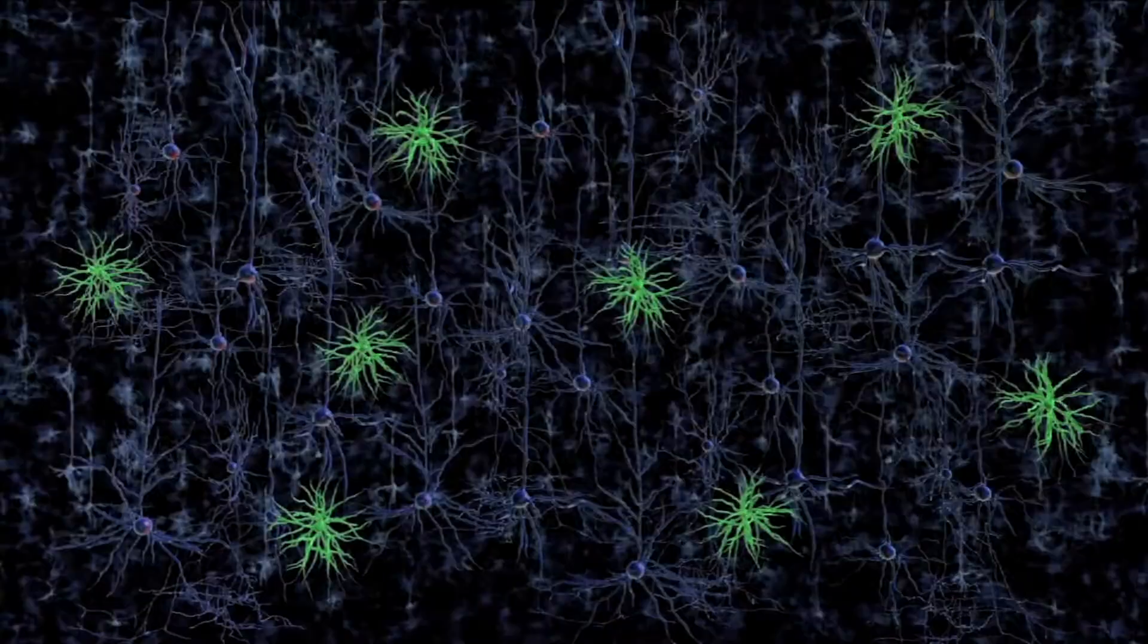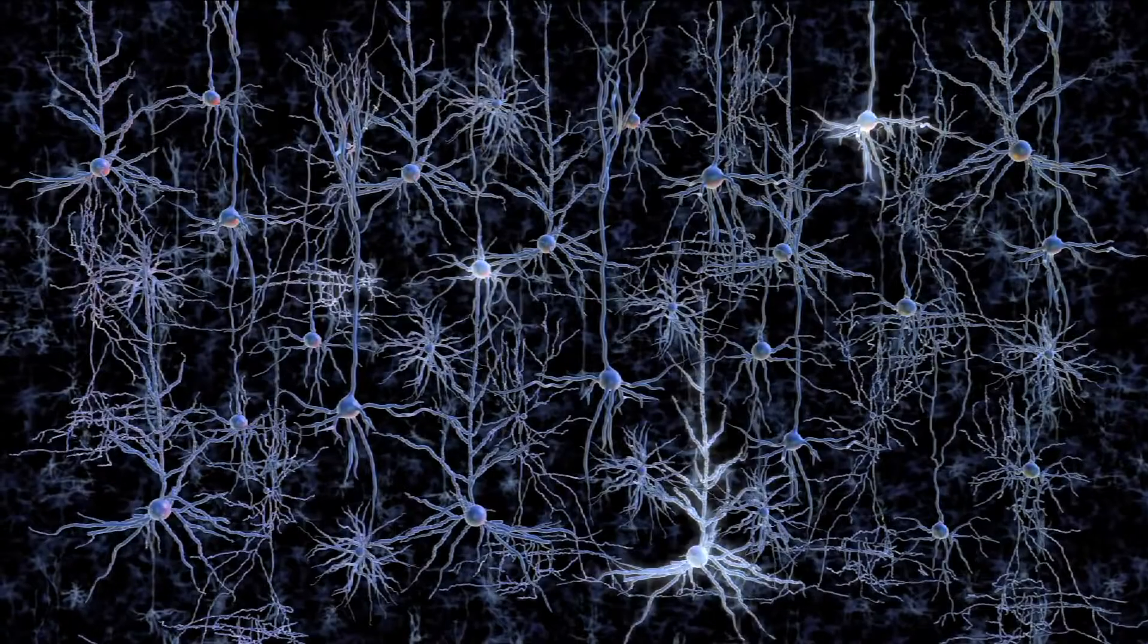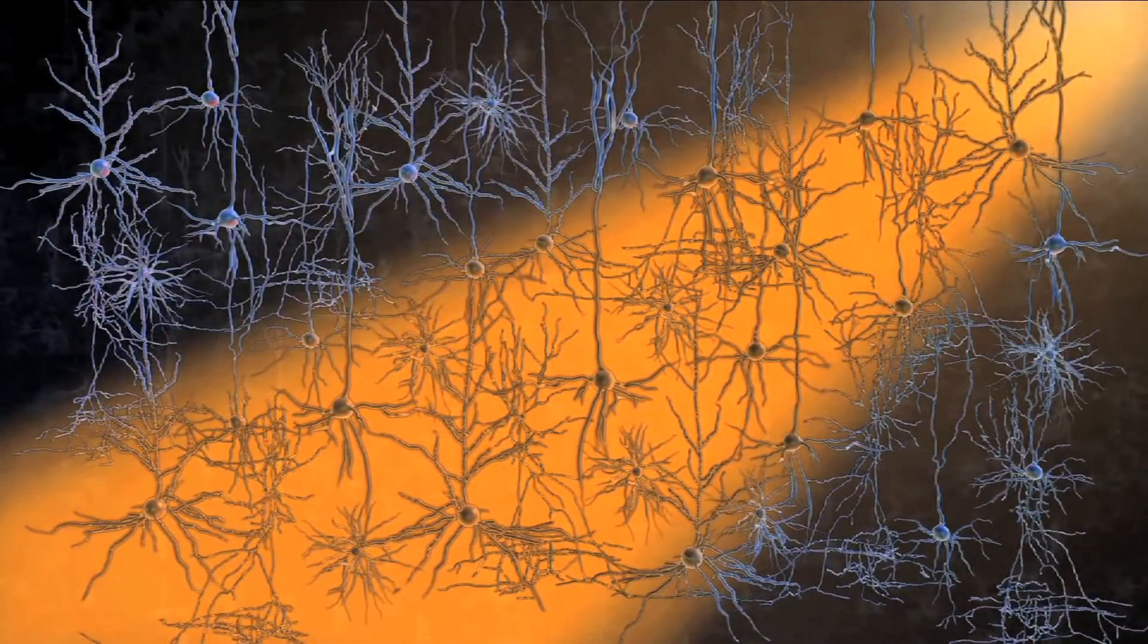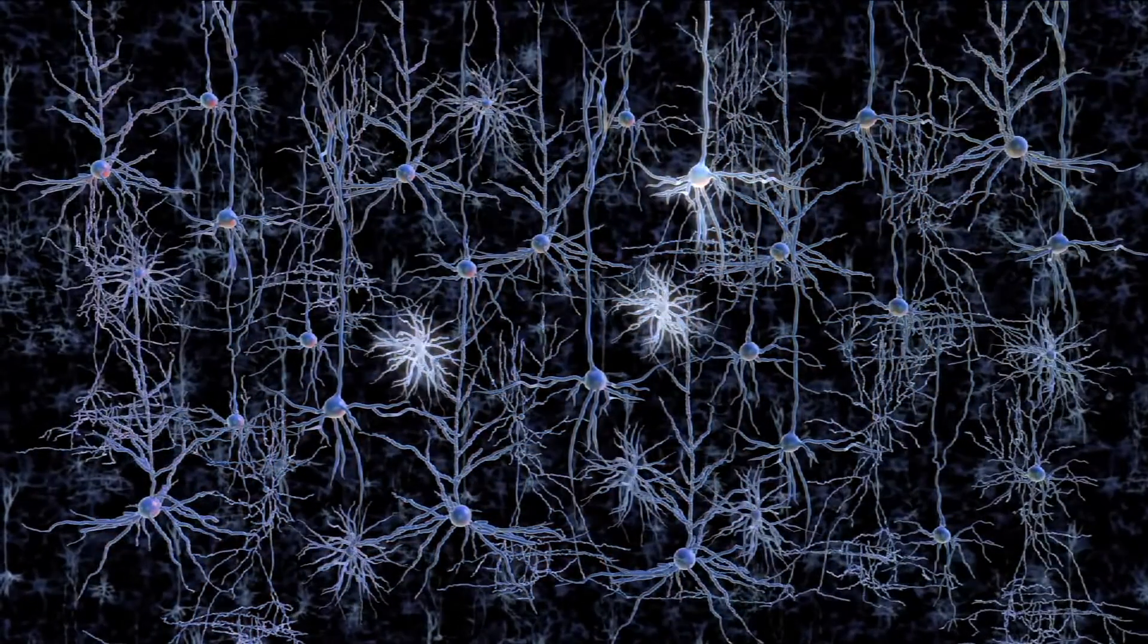And these tools don't just activate neurons - they can silence them as well. Archaerhodopsin and halorhodopsin, for example, are proteins that are sensitive to orange light and produce the opposite effect to channelrhodopsin. When researchers deliver DNA that encodes for one of these